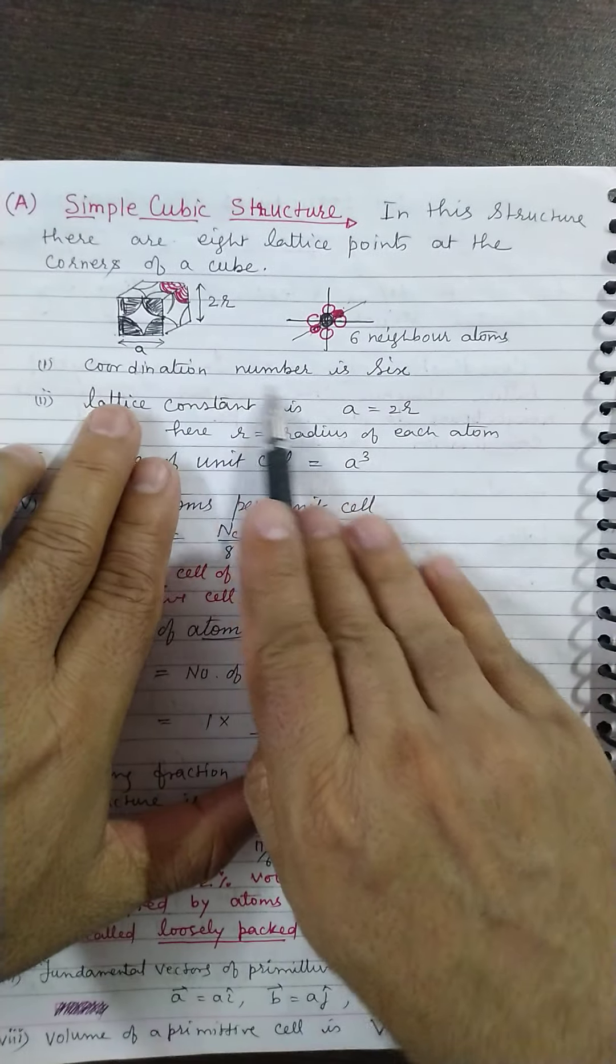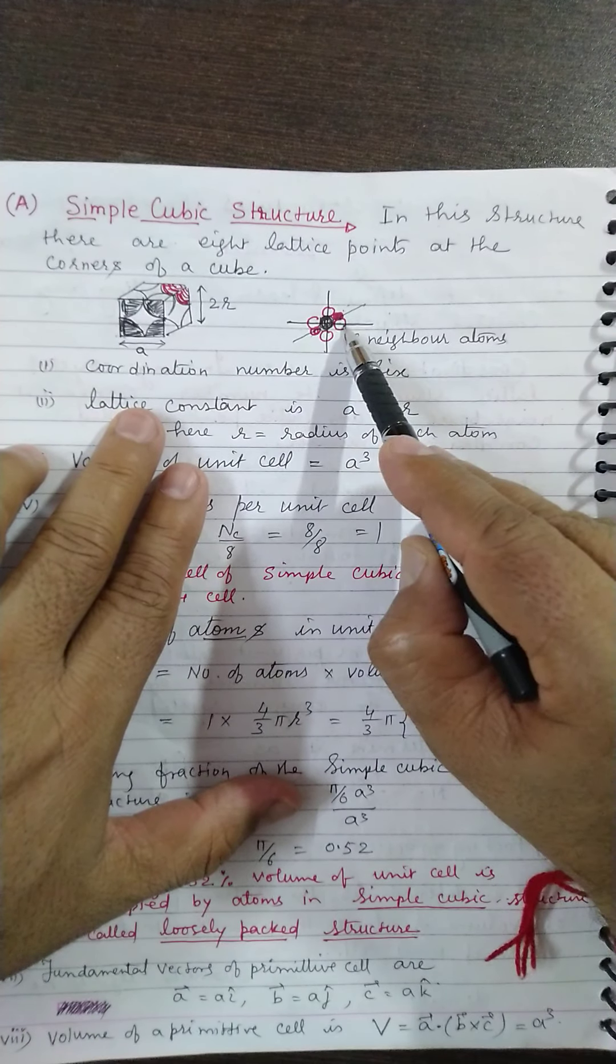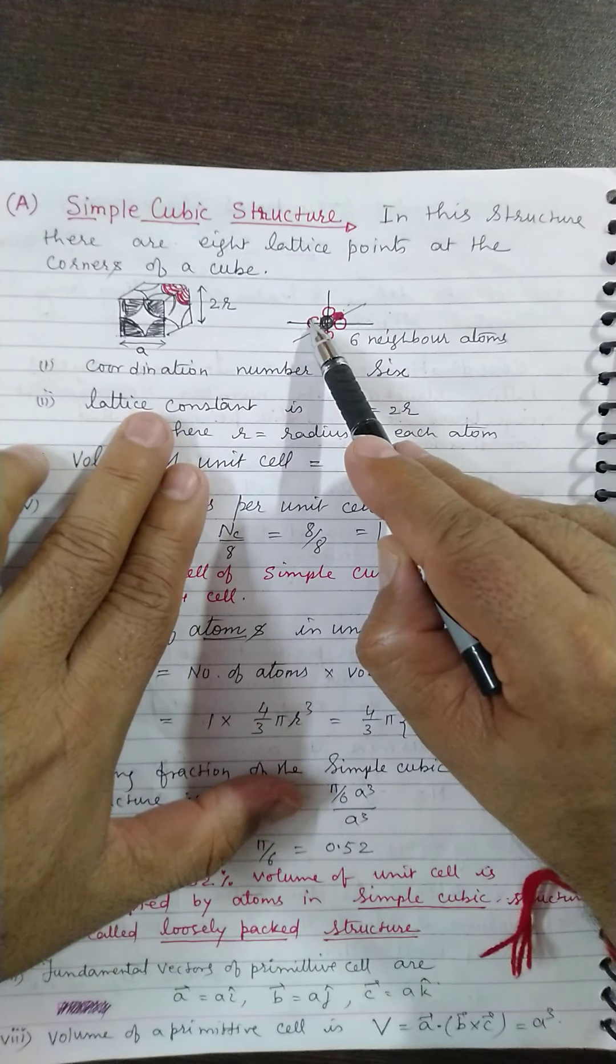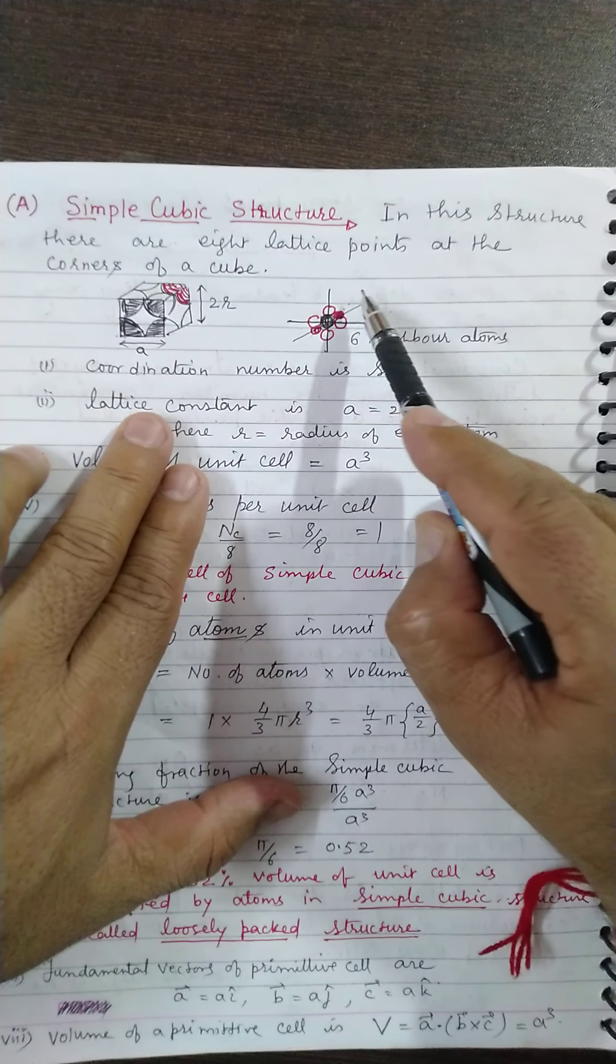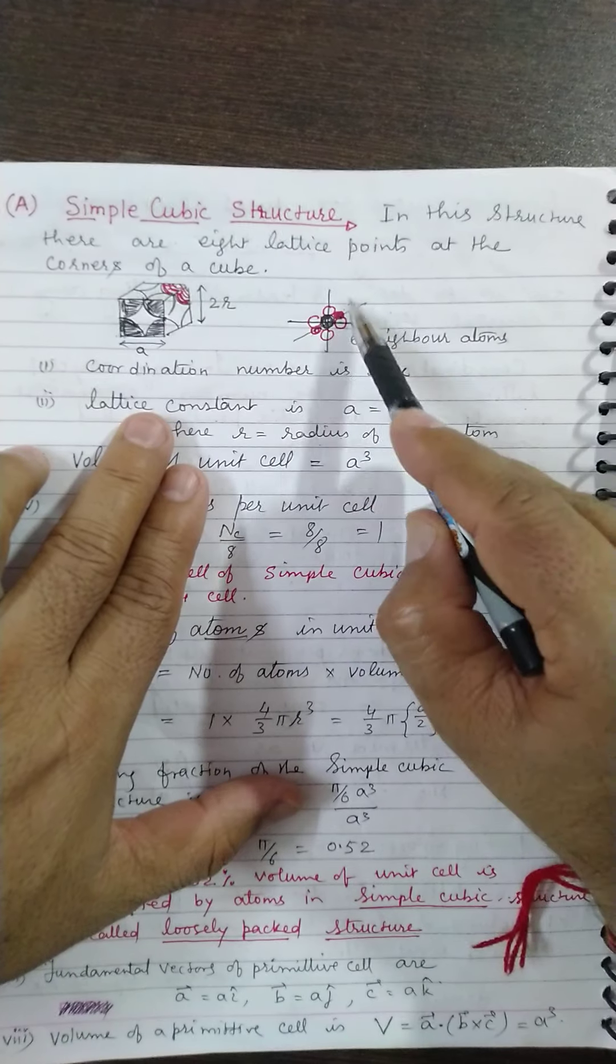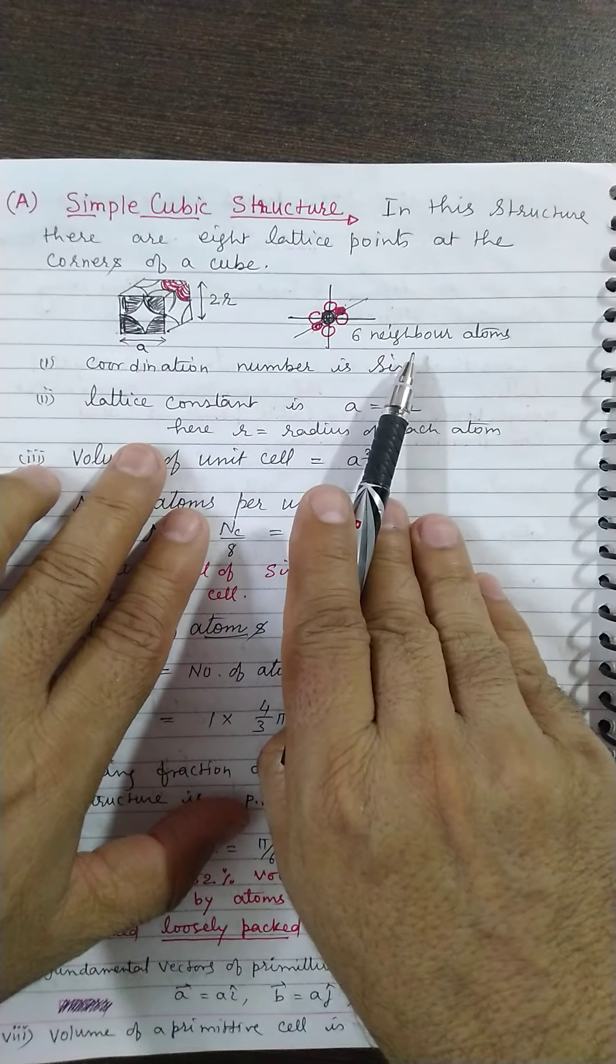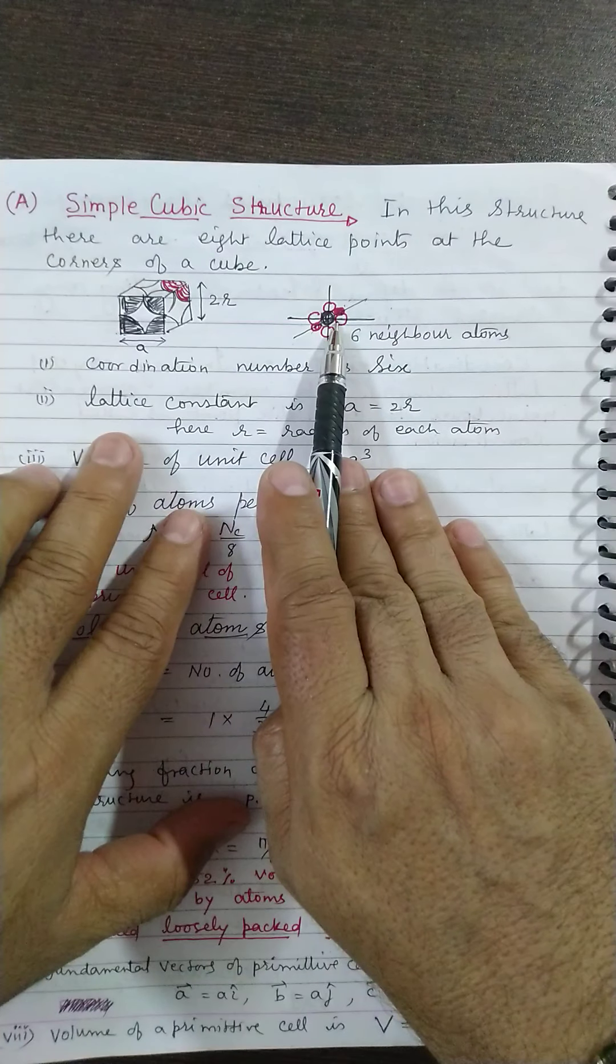So this is how the six neighbors will be there. I can say coordination number is six because two atoms—one on positive axis, one on negative axis side, one on positive Y, negative Y, positive Z, negative Z—so there are six neighbors of every atom touching it.